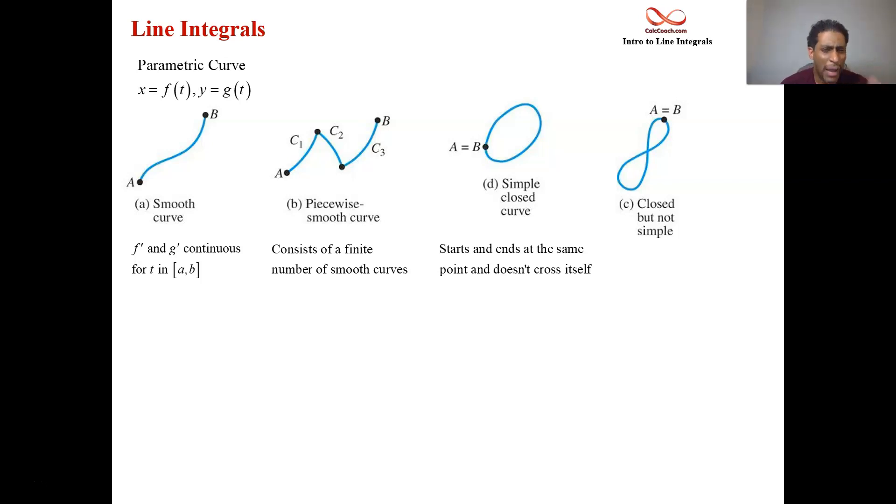On top of just the idea of having a curve, the curve needs to have an orientation to it, a starting point and an ending point. And so, if we're going in the general direction of the curve, we call that curve C. If we'd like to travel backwards along the curve, we call that curve negative C.